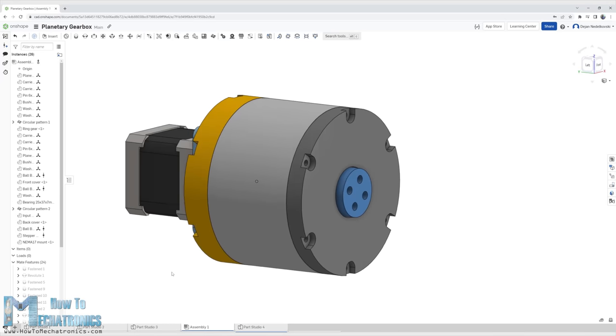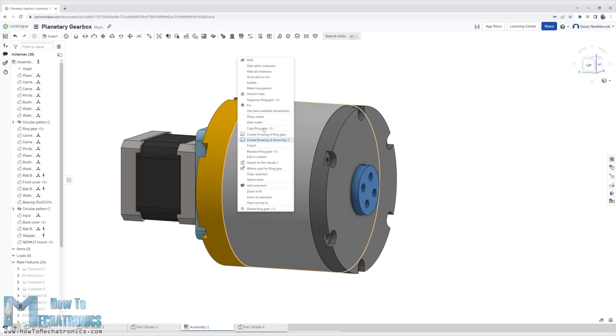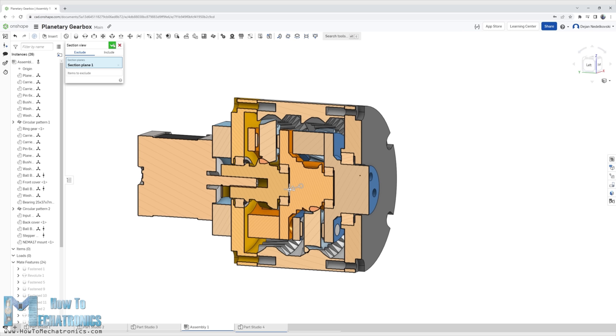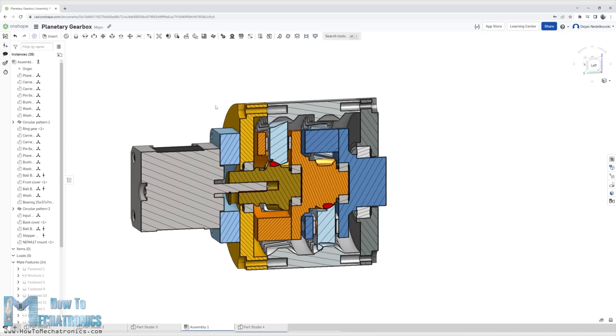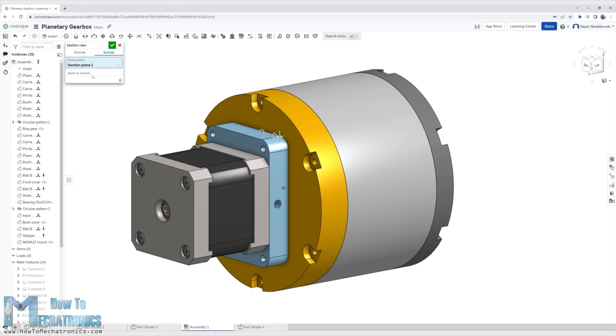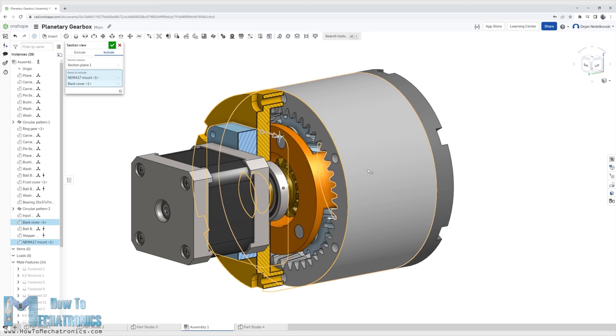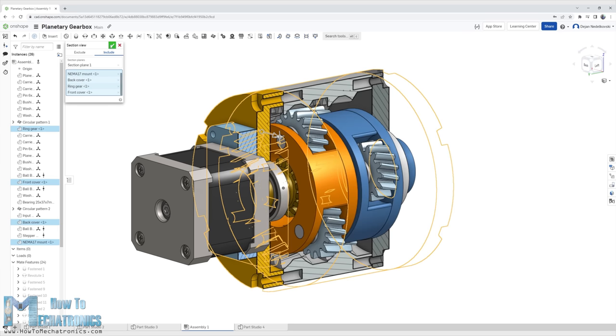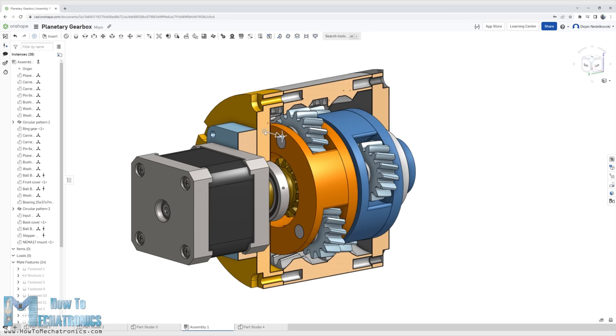Back to topic, now let me explain how I designed this planetary gearbox. To begin with, the first input parameter for designing the gearbox was that I wanted to have a reduction ratio of around 15 to 1 and to be a whole number. In order to get such a ratio, the planetary gearbox had to be a two-stage gearbox.